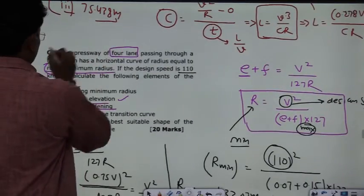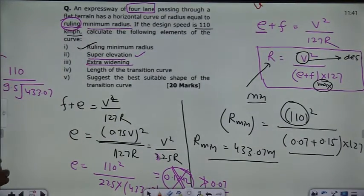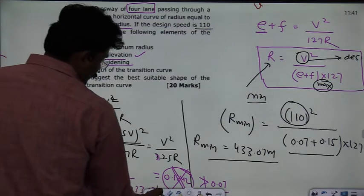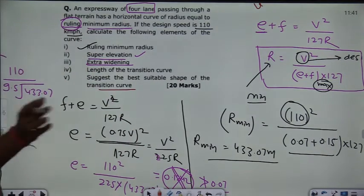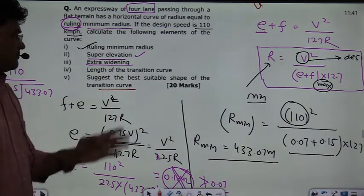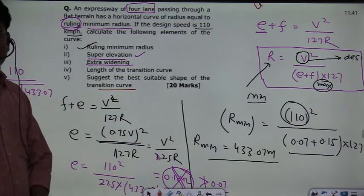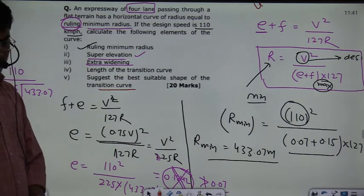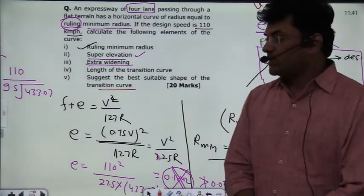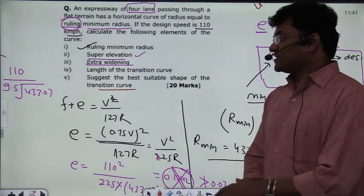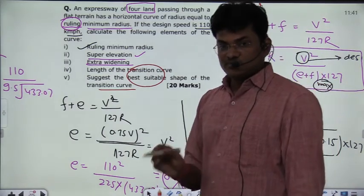The next question asks for the best suitable shape for the transition curve. For a horizontal transition curve, the best shape as suggested by IRC is the clothoid spiral. Alternatively, lemniscate and cubic parabola can also be used, but the IRC-recommended best suitable shape is the clothoid spiral.